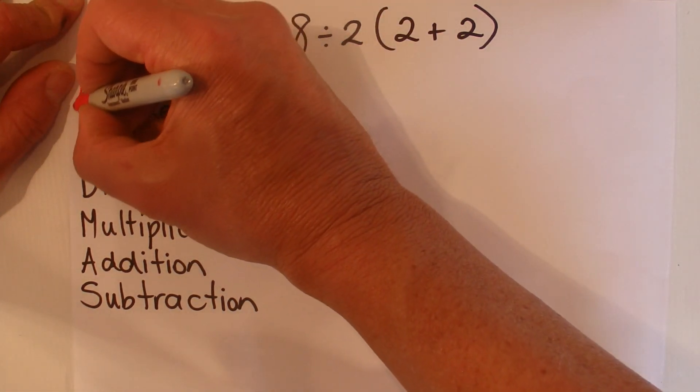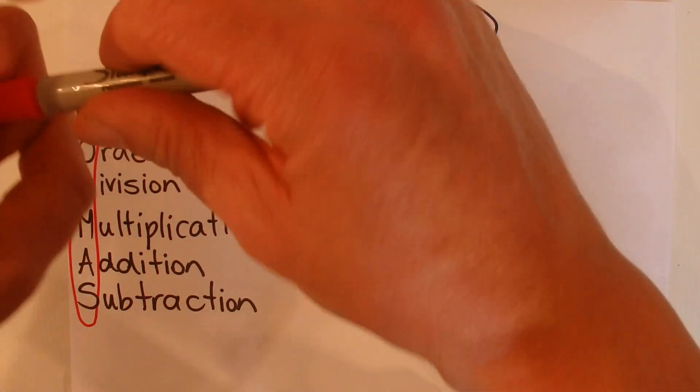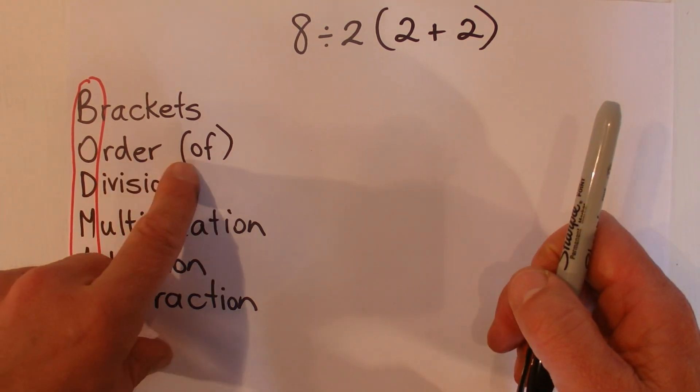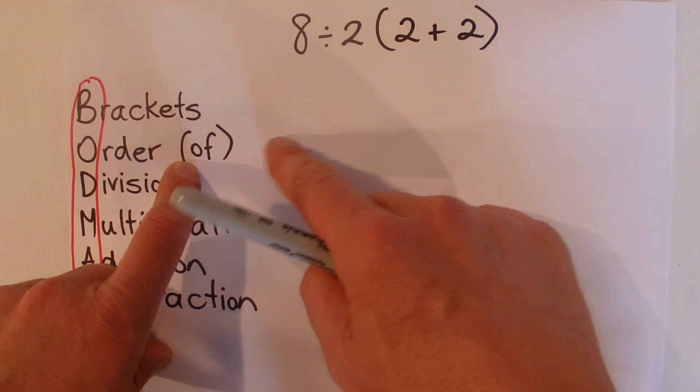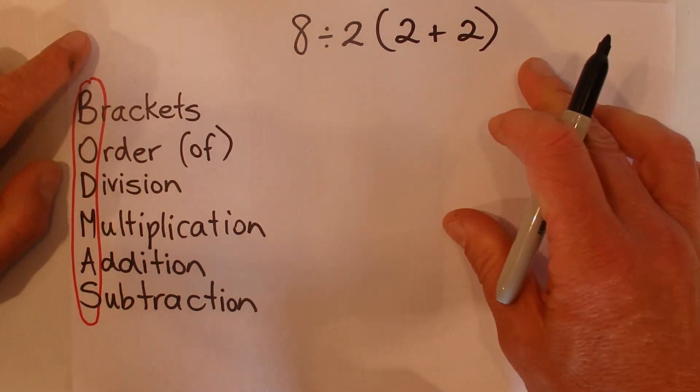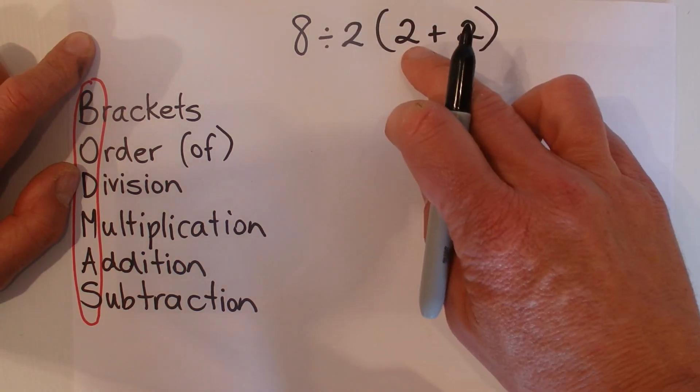First, you need Brackets, then Order (or to the power of), Division, Multiplication, Addition, and Subtraction. That means that for an equation like this, you do everything that's in the brackets first. So you do the 2 plus 2 which is 4, and that's your first step.